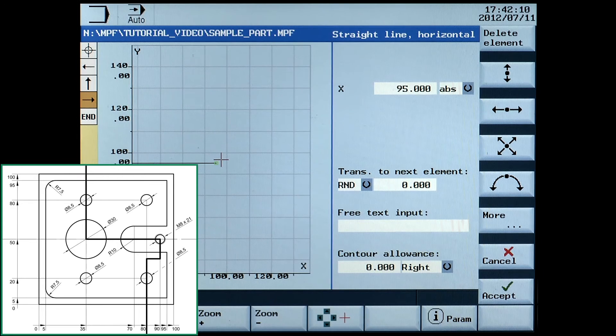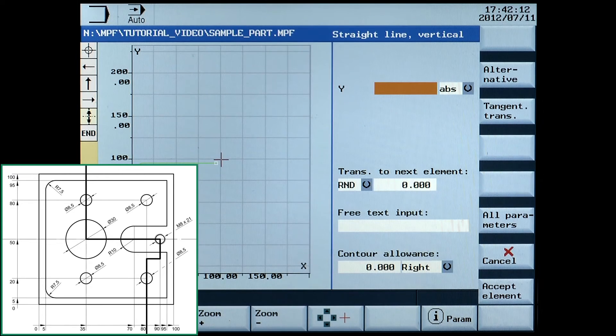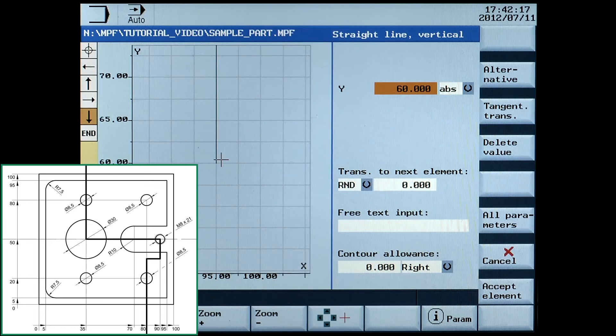Next is a horizontal line. Enter X50 absolute. Accept element.